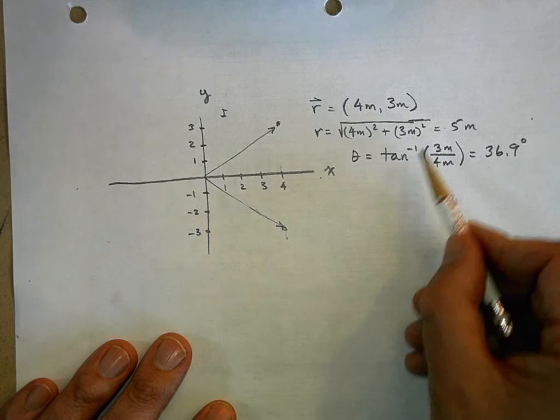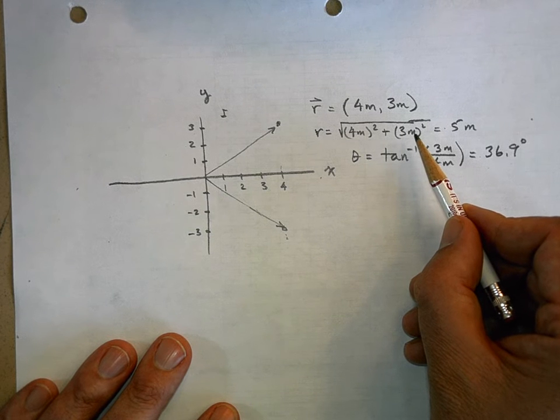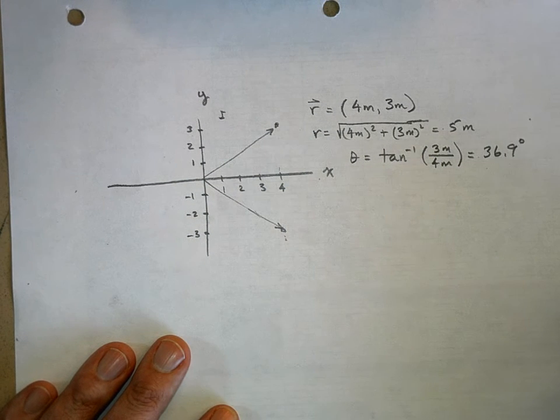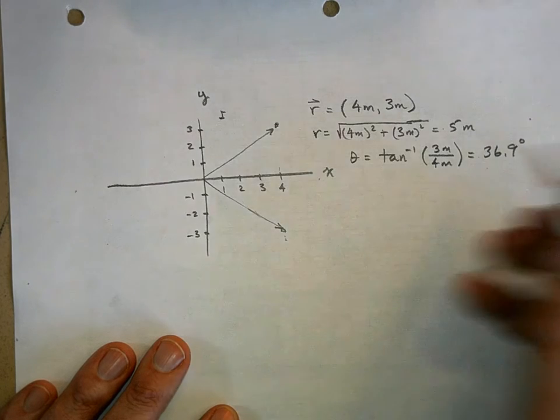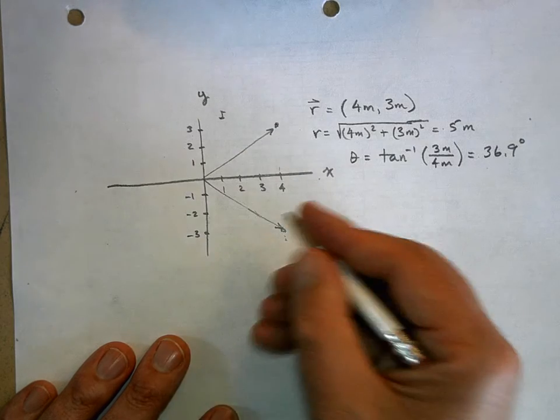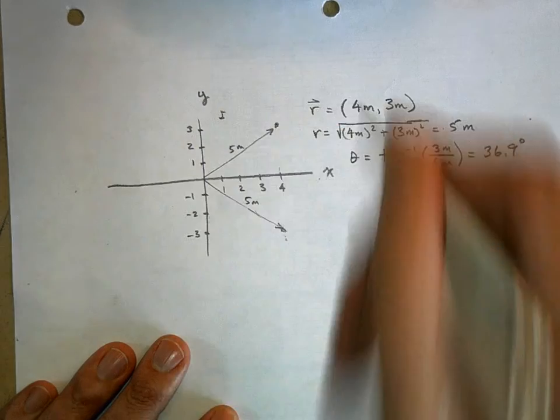But what happens when you use Pythagorean theorem? What is negative 3 times negative 3? It's still positive 9, negative times negative is a positive, and so you still have 16 plus 9, you still have the square root of 25, which is still 5 meters. So this is still 5 meters long, like it was up here.